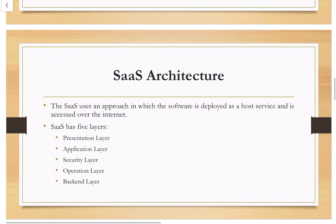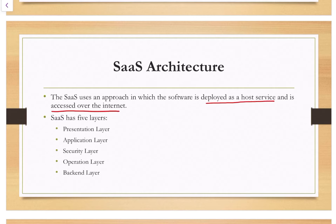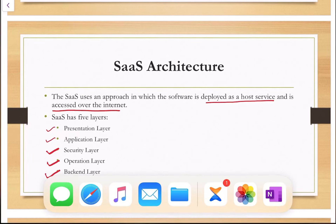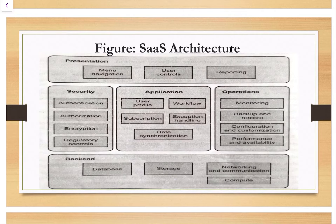Now let us see the SaaS architecture — how SaaS works. SaaS uses an approach in which the software is developed as a hosted service and is accessed over the internet. Basically, SaaS architecture has five layers: the first is the presentation layer, second is the application layer, third is the security layer, fourth is the operation layer, and fifth is the backend layer.